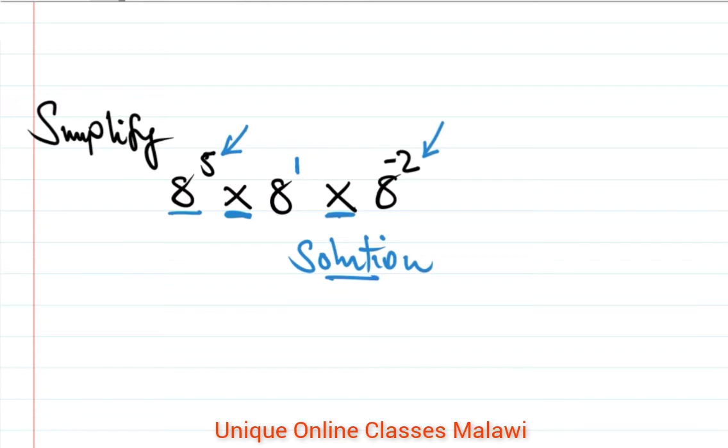When you are multiplying numbers with the same base—base 8 is the same, base 8—we are multiplying them. To find the answer we just add the powers.